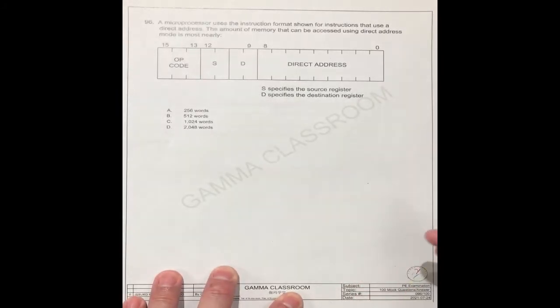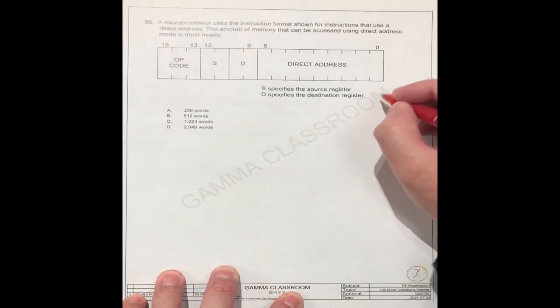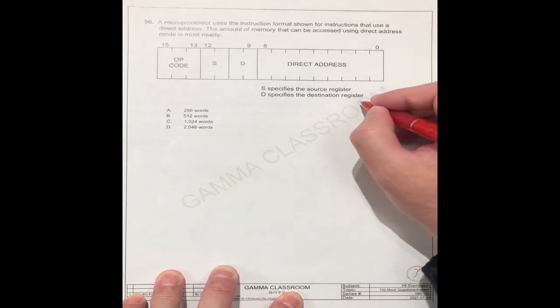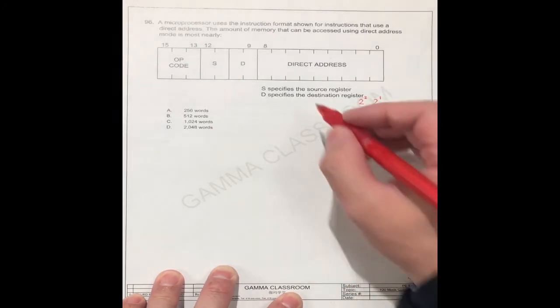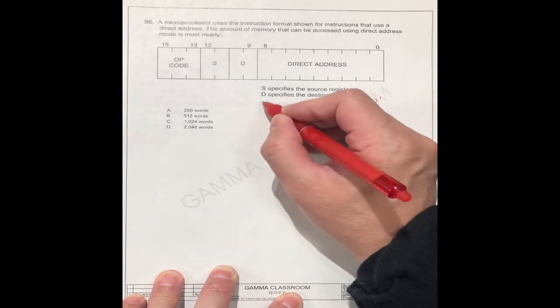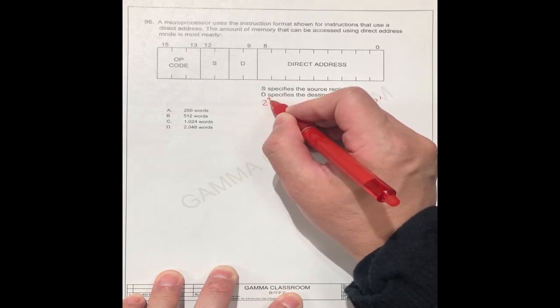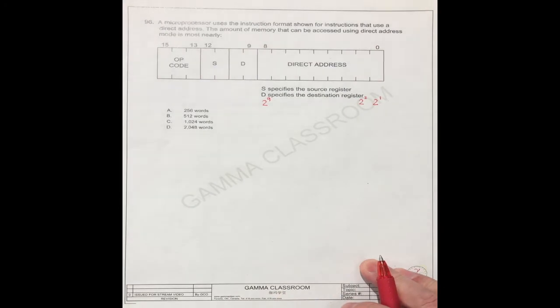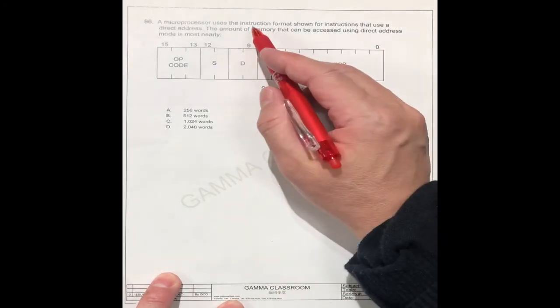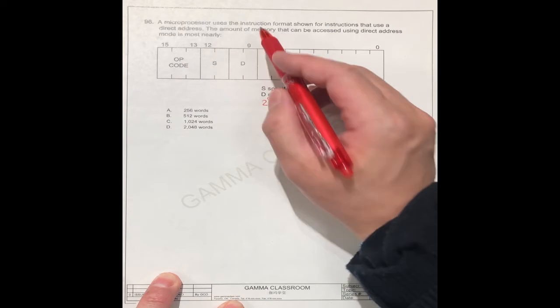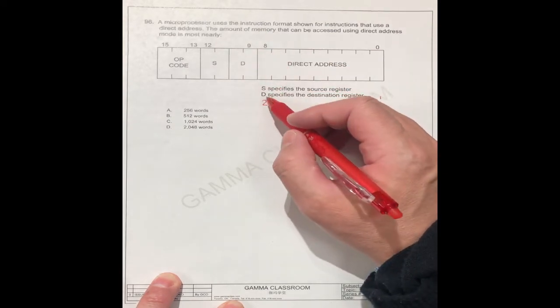We know that for binary, you see the first one, the number is two power one. The second one is two power two. The same goes this way. This is the last one is two power nine. So all the maximum amount of memory from this one depends on this number.